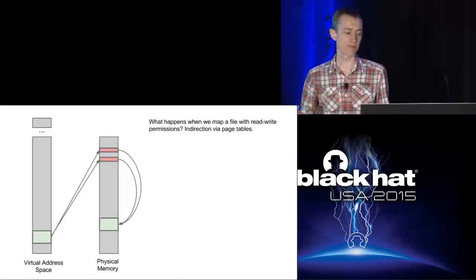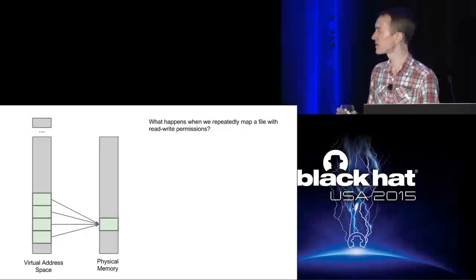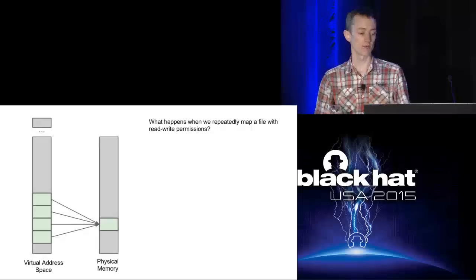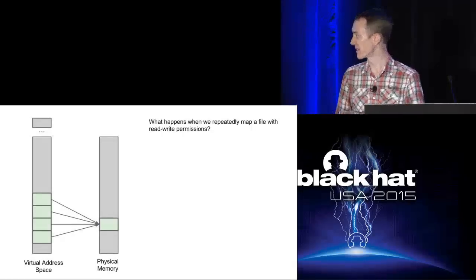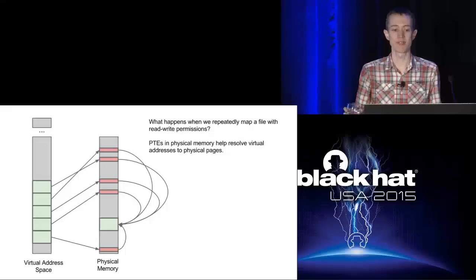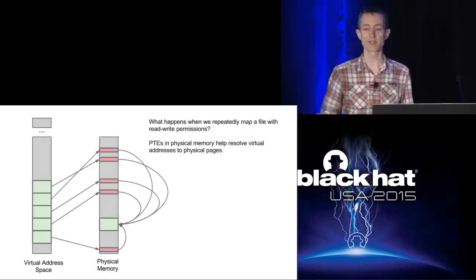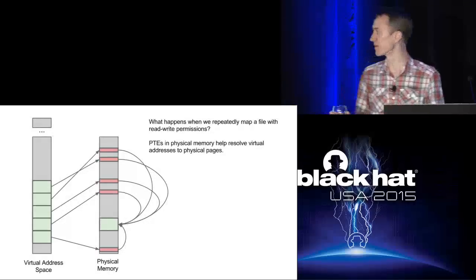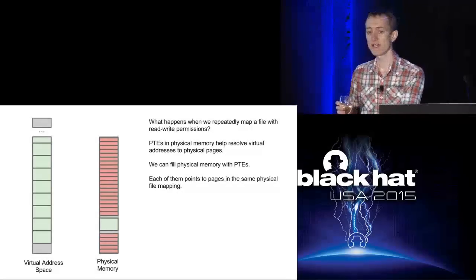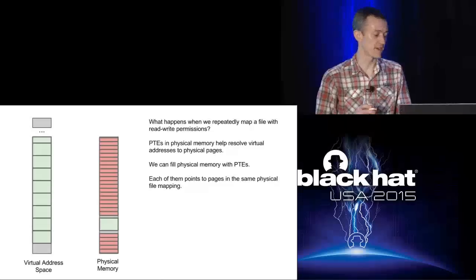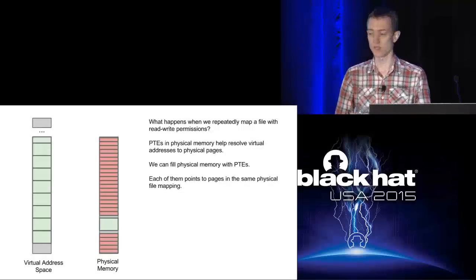If you allocate a page of memory using mmap, the kernel allocates a physical page and sets up a page table pointing to that physical page. Operating systems also have features for shared memory that let you map the same page multiple times. If we create a shared memory segment and mmap it multiple times, we get lots of page tables pointing to the same physical pages. Suppose we create a 2 megabyte segment of shared memory and mmap it 10,000 times - each mapping results in creating one 4K page table, so we would get page tables filling 40 megabytes of physical memory. We can scale that up to fill most of physical memory with page tables. Linux lets us do this because it doesn't have any bound on the number of page tables you can create.